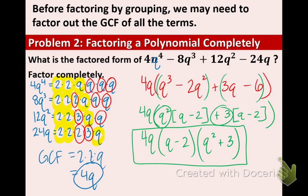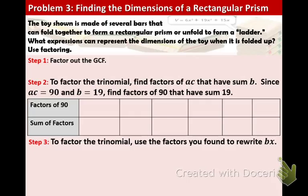Alright, on to our last example. This is an application problem. We need to figure out the dimensions of the toy when it's folded up. So, when it's folded up, it forms a prism. And, to find the volume of a prism, you just do length times width times height. So, that's what we're trying to figure out is those dimensions. The first thing that I suggest we do is factor out the GCF.